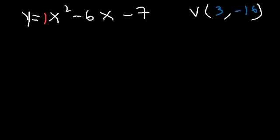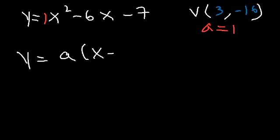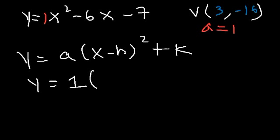Now that we have the coordinates of the vertex, and we know a is the number in front of x squared, so a is 1, we can write the equation in vertex form: a times x minus h, squared, plus k. So it's 1 times x minus 3, squared, plus negative 16. Notice this is the same equation that we got earlier.